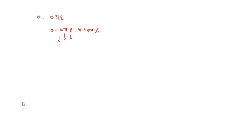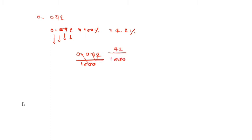Now 0.042. How will we write 0.042 into percentage? 1s, 10s, 100s, 1000s — the decimal goes to the 1000s place, so 0.042 means 42 divided by 1000. We need only 100 for percentage form, so cancel two zeros: 4.2 by 100, which gives 4.2 percentage.